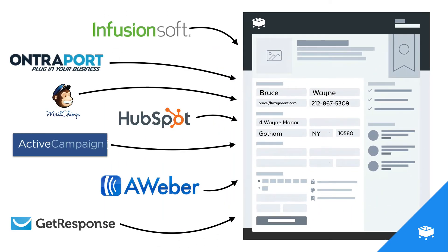And so if you are mailing your visitors to your checkout page from Infusionsoft, Entreport, MailChimp, HubSpot, ActiveCampaign, Aweber, GetResponse, or any other email marketing tool that might have someone's name, email address, and phone number — you can pre-populate your checkout page so that your customers spend less time typing in their information.